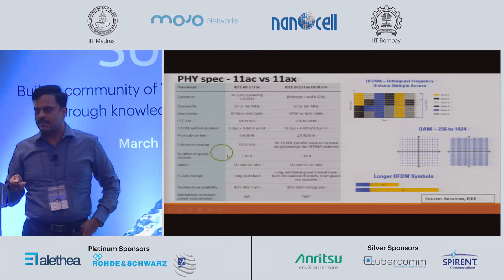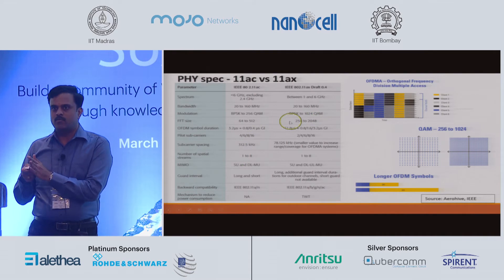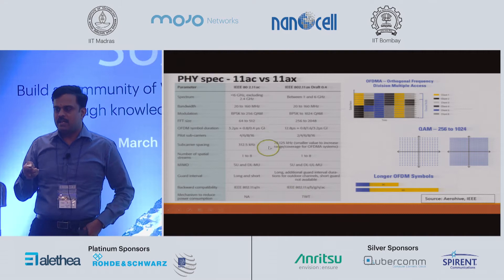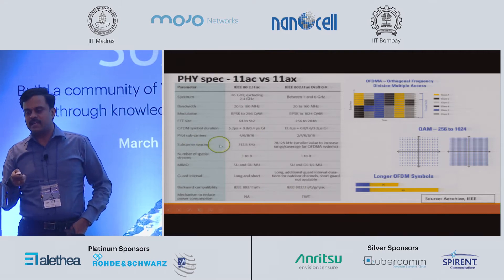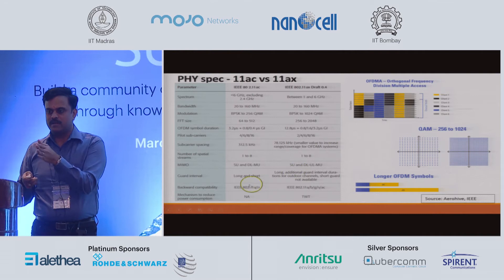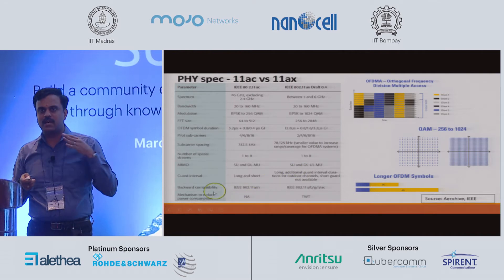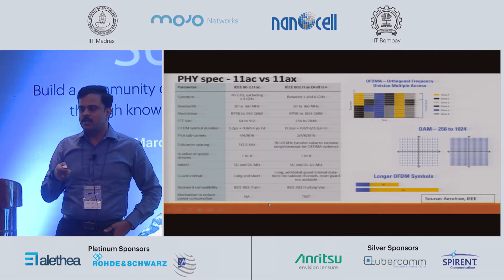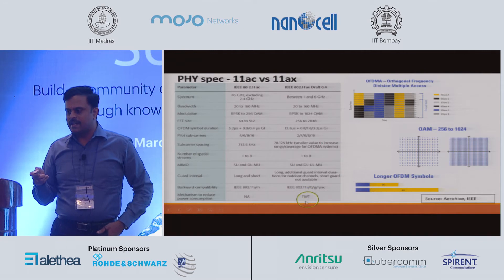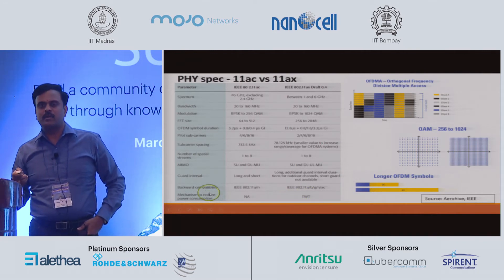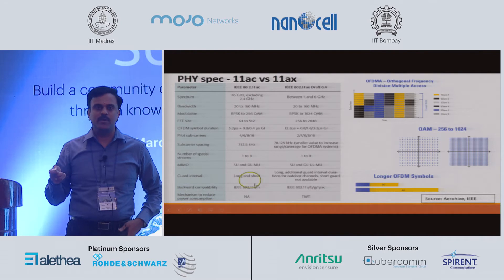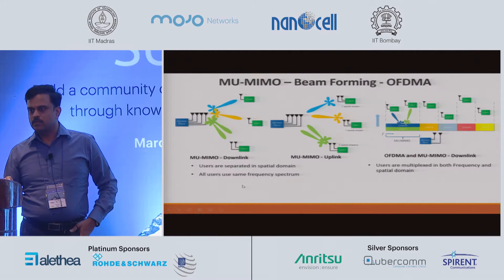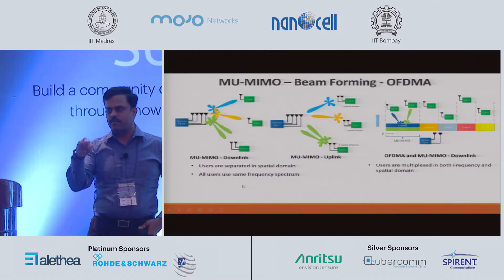Backward compatibility wise, 11AC and 11AX — Wi-Fi always focuses on backward compatibility. 11AD is probably an exception because it is in a totally different band, but all other 802.11 standards operate either in 2.4 or 5 GHz, so they are very much backward compatible. Another key thing that can help IoT devices is TWT for power save methods that can be implemented in the clients.